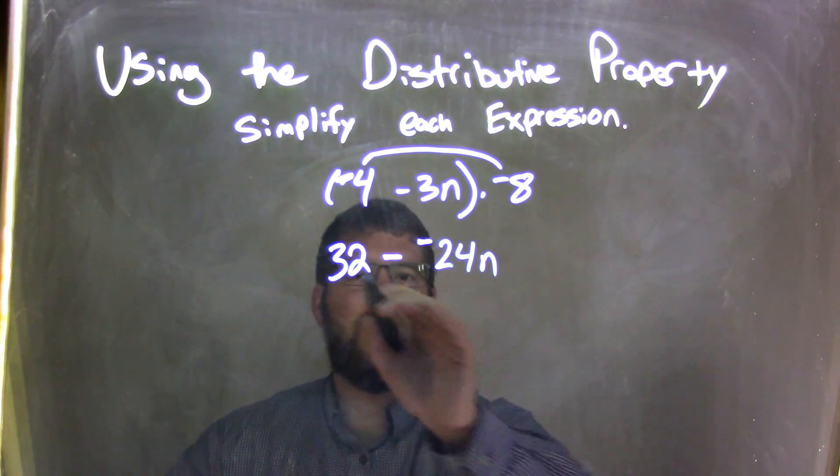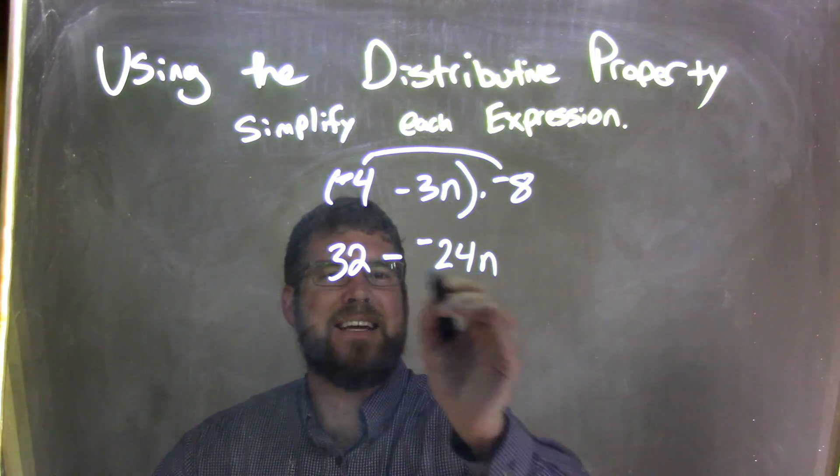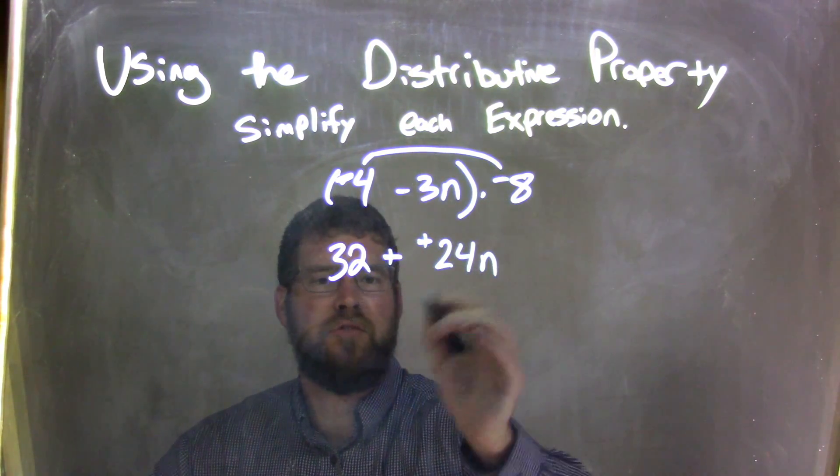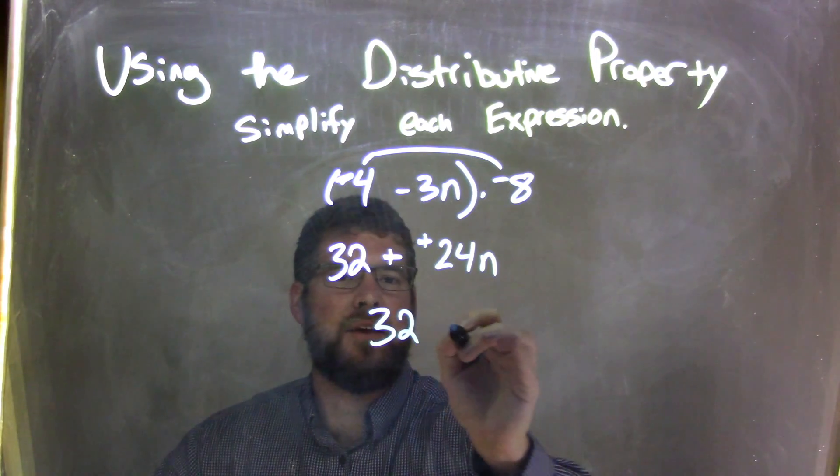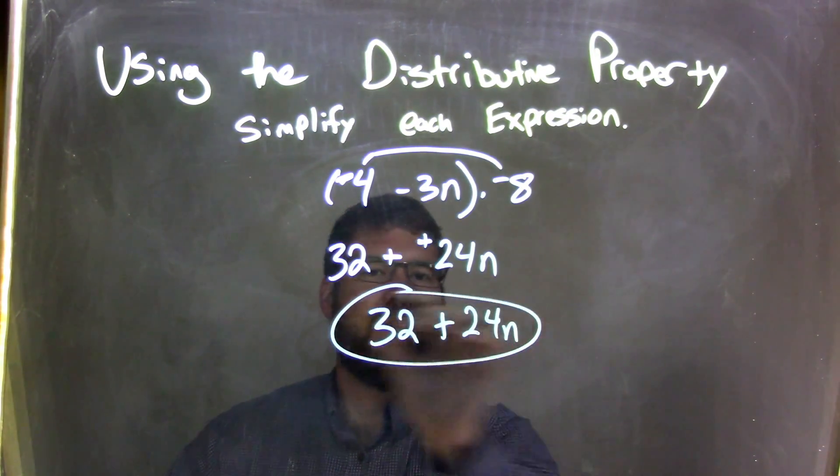So I have 32 minus negative 24n. We know that minusing a negative is adding a positive. So our final answer is 32 plus 24n.